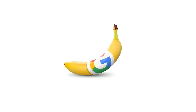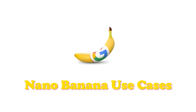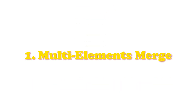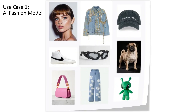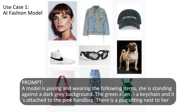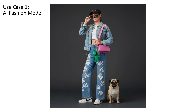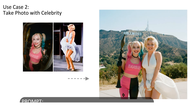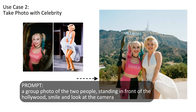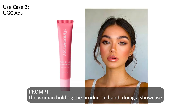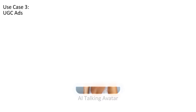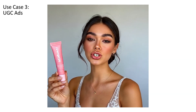Now let me show you some of the most viral and funny use cases of Nano Banana. Category 1: Multi-Element Merging. Nano Banana can merge multiple images seamlessly — it automatically blends backgrounds, adjusts poses, and balances lighting. You can even take a photo with a celebrity from the past, or merge products with models to create UGC-style ads. And if you pair it with Fodor's AI Talking Avatar, you can turn them into natural-looking ad videos.